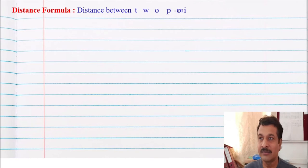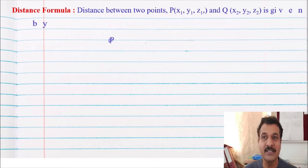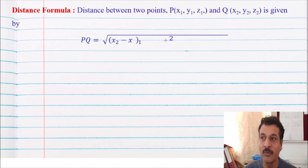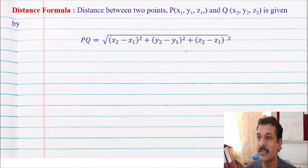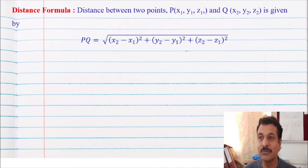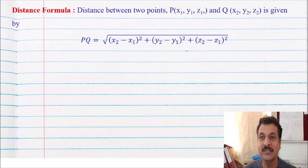First is the distance formula — that is the distance between two points P and Q. We can find it by the formula: PQ equals the square root of (x2 minus x1) squared plus (y2 minus y1) squared plus (z2 minus z1) squared.